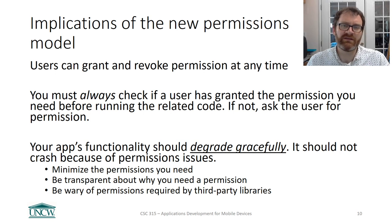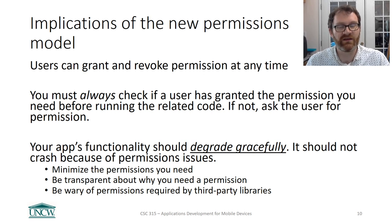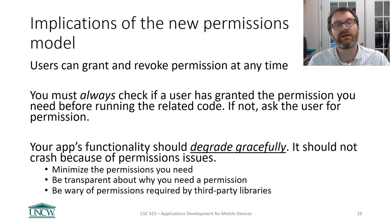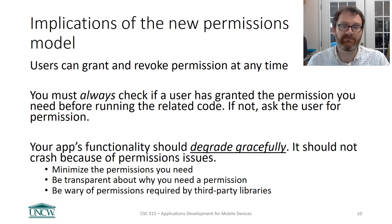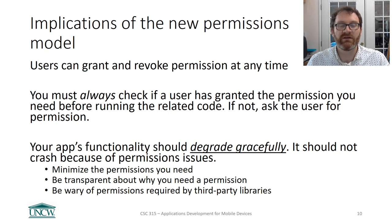In the lab, we'll see an example of an app that records where the user's current location is, saves that data, and displays it in a list. Part of that will involve first requesting permission from the user to get the location, and then once you get that permission, actually starting to read the location data. We'll talk about that in a future video and in your lab.